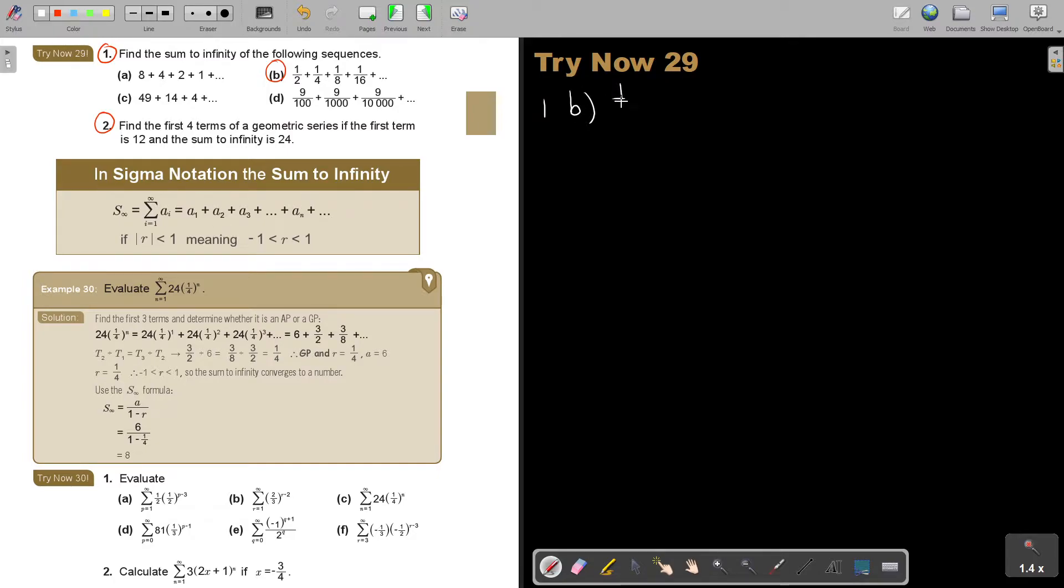Okay, so this is a half plus a quarter plus 1 over 8 plus 1 over 16 plus 1, 2, 3. Okay, so if we start there, then we're going to say the value of A is a half. Now, the value of R, okay, it's t1, t2, t3.